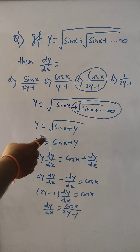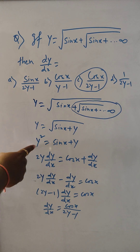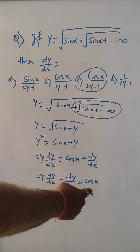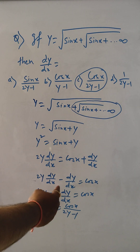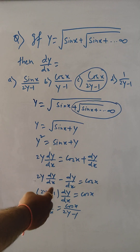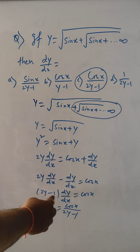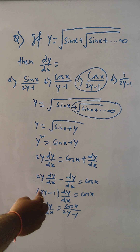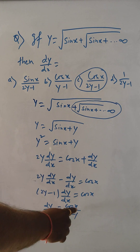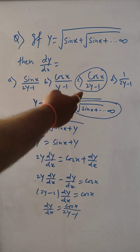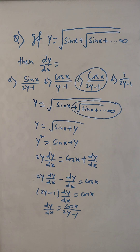So this is very simple. Here we are doing the squaring of both sides, giving 2y dy by dx for sin x, that is cos x, and y's dy by dx. Then we brought terms to one side, took dy by dx common, got 2y minus 1, brought it to this side, and the answer is cos x by 2y minus 1. Thank you for watching, please like and subscribe.